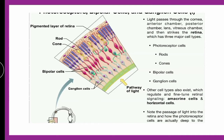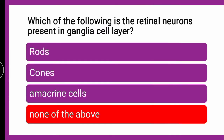Here you can see the different parts like photoreceptor cells — rods, cones, ganglion cells, and other cell types such as amacrine cells. So the correct answer is none of the above. The retinal neuron present in the ganglia — the answer is none of the above.